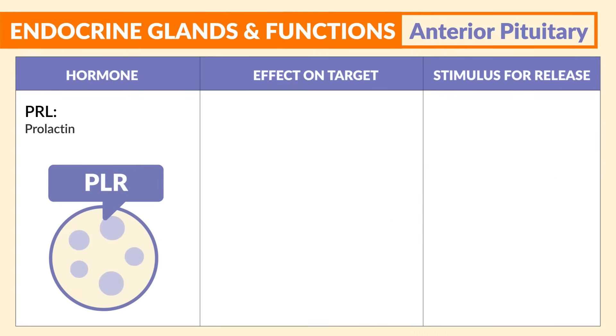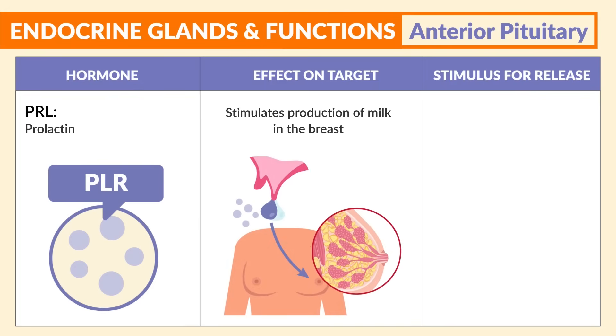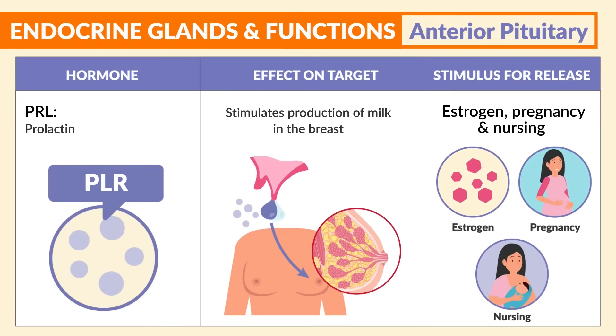Next is PRL, prolactin. It stimulates the production of milk in the breast. And the stimulus for release is estrogen, pregnancy, and nursing.